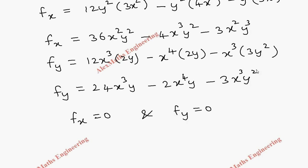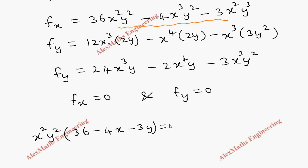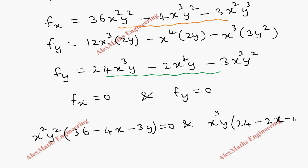Now we have to set fx = 0 and fy = 0. For fx = 0, we cannot take any number common from 36, 4, and 3, but we can take x² and y² common. The remaining factor becomes (36 - 4x - 3y) = 0. For fy = 0, we take x³ and y common, giving the factor (24 - 2x - 3y) = 0.